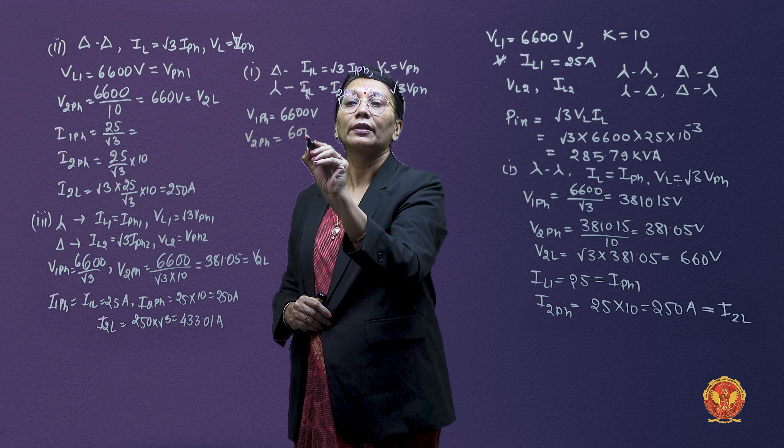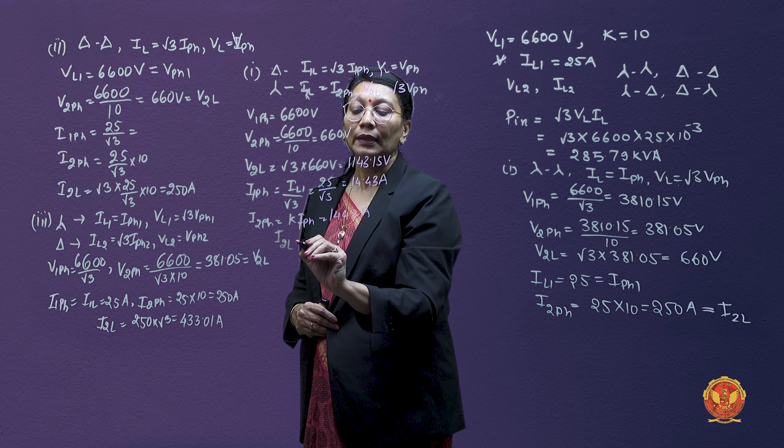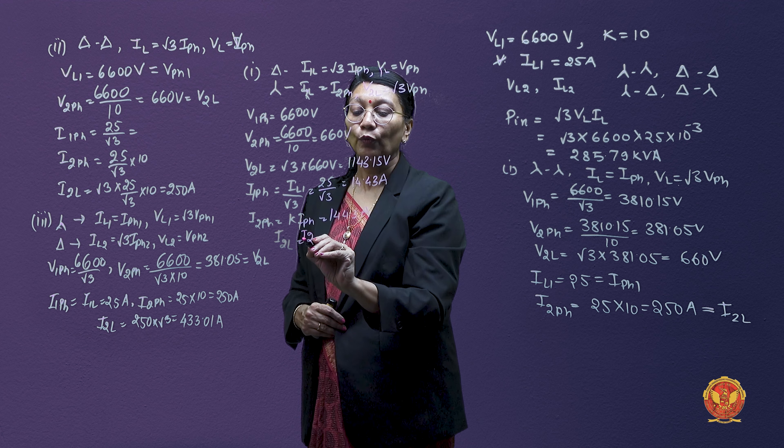For the delta-star current: the primary phase current = IL ÷ √3 = 25 ÷ √3 = 14.43 A. The secondary phase current I2 phase = K × I1 phase = 10 × 14.43 = 144.3 A. Since secondary is star-connected, the secondary line current I2 line equals I2 phase = 144.3 amperes.